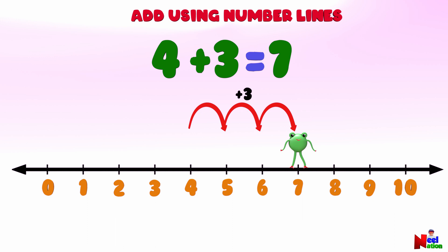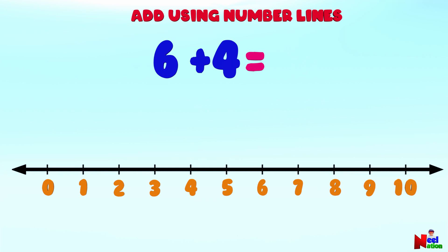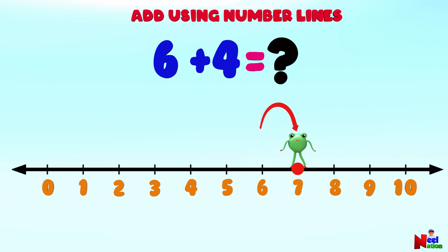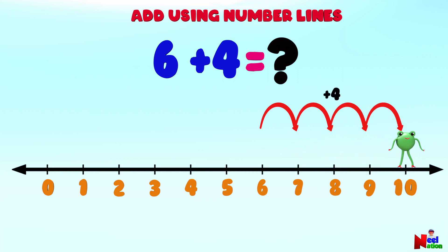Awesome job! Next, what is six plus four? Can you locate number six on the number line? Here you go. Starting from number six, Mr. Lutu will jump four points forward to the right — one, two, three, four. Where is Mr. Lutu? Number ten!